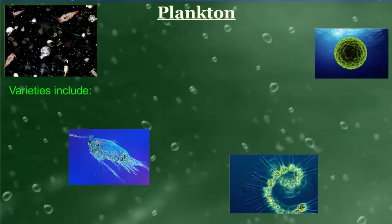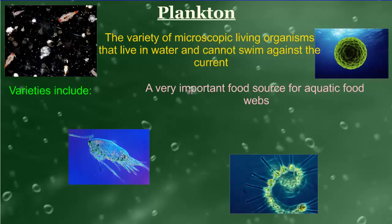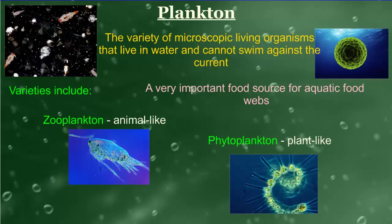The next term, plankton, you'll hear a lot when we talk about food webs and food chains, as plankton are the base of many different aquatic systems. Plankton refers to the variety of microscopic living organisms that live in water and cannot swim against the current by themselves. There are many different varieties, all important food sources for aquatic food webs. One variety is zooplankton — animal-like plankton. Another is phytoplankton, with 'phyto' referring to light, so they use light like a plant does.